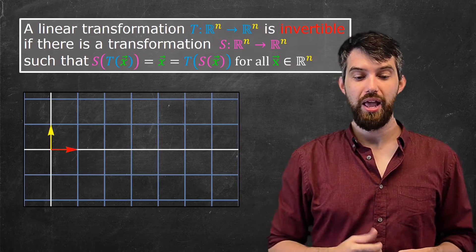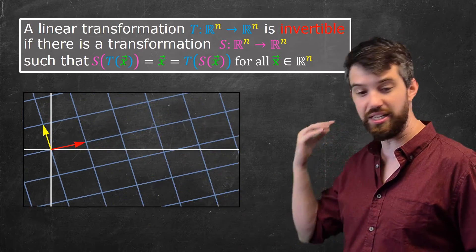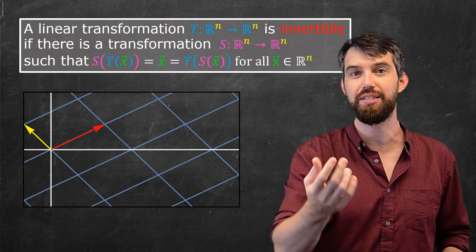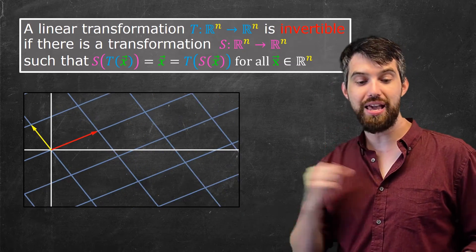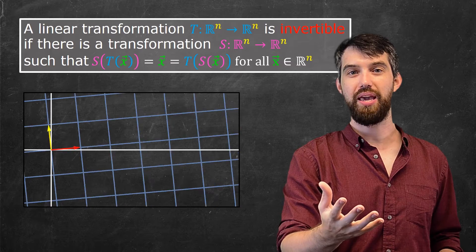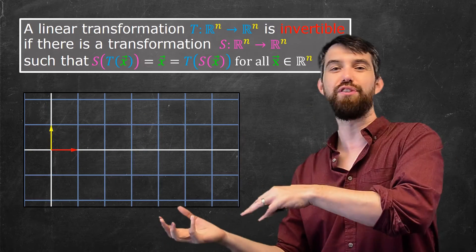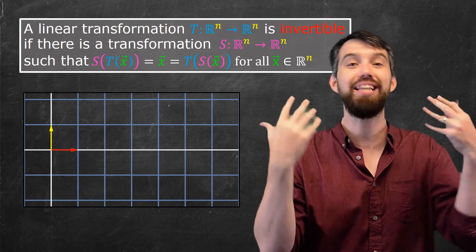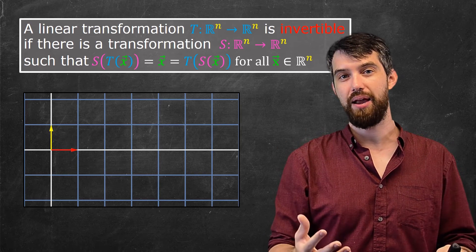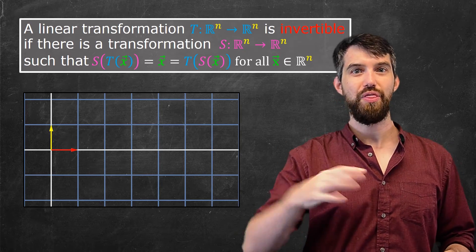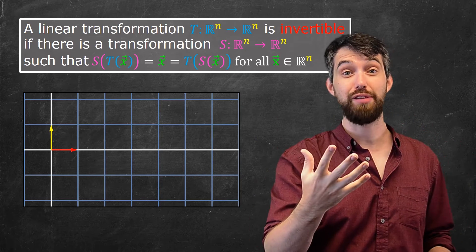So for example, if I have some transformation here and I go out along T and my transformation does whatever it does, then I can go back along the S transformation and I get back to where I began. Or I can go out along the S first and then back along the T and I again get back to exactly where I began. Okay, so that's our definition of an invertible transformation.